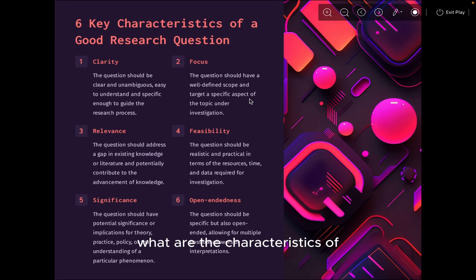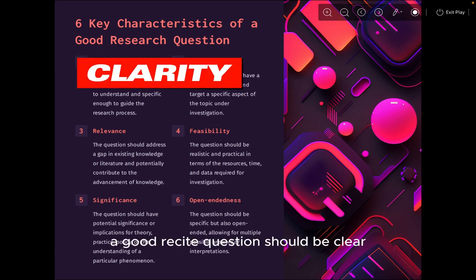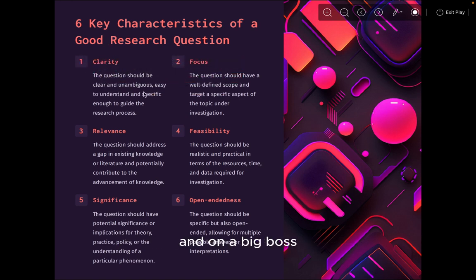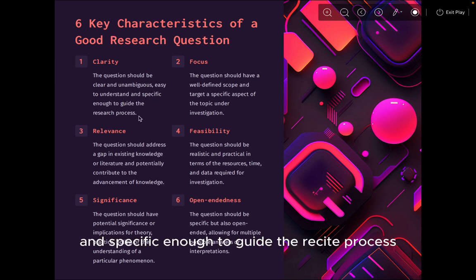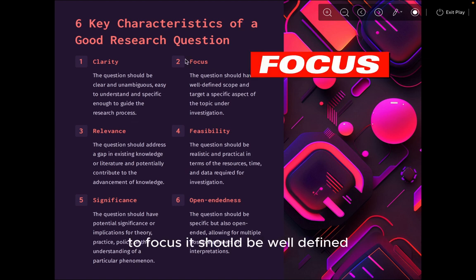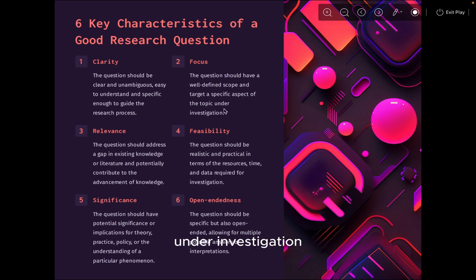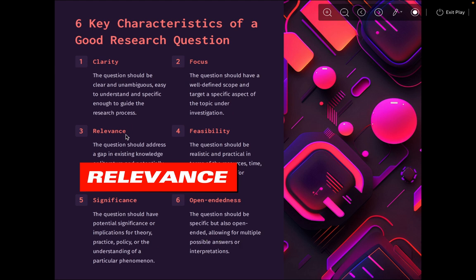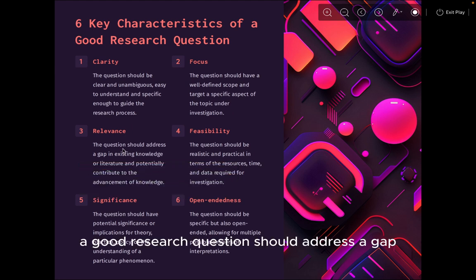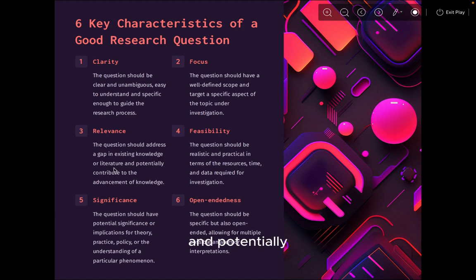What are the characteristics of a good research question? One, clarity — a good research question should be clear and unambiguous. It should be easy to understand and specific enough to guide the research process. Two, focus — it should be well defined in scope and target a specific aspect of the topic under investigation. Three, relevance — a good research question should address a gap in existing knowledge or literature and potentially contribute to the advancement of knowledge.